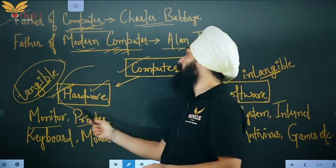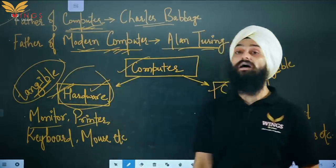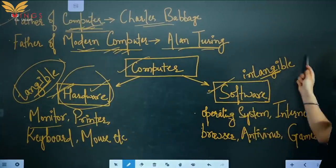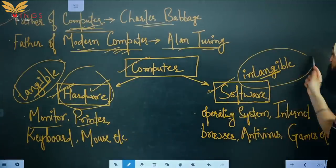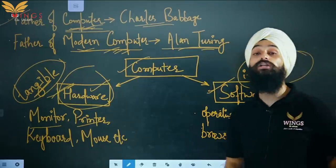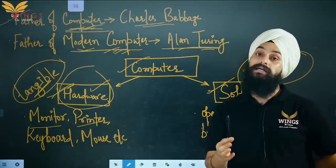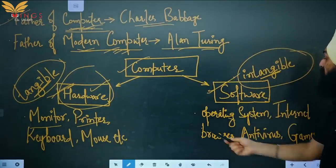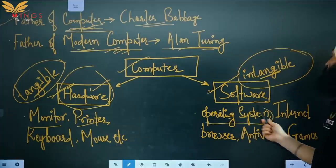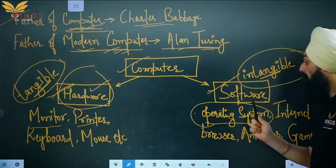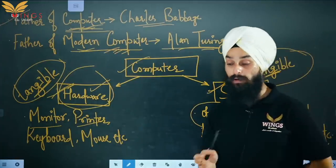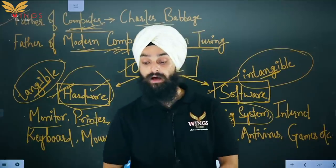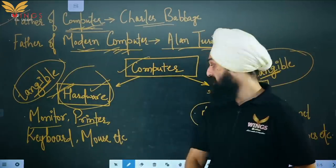Software, on the other hand, refers to intangible parts — parts which you cannot touch, but you can feel and use. An example is the operating system. The operating system is an interface, meaning it acts as a mediator.